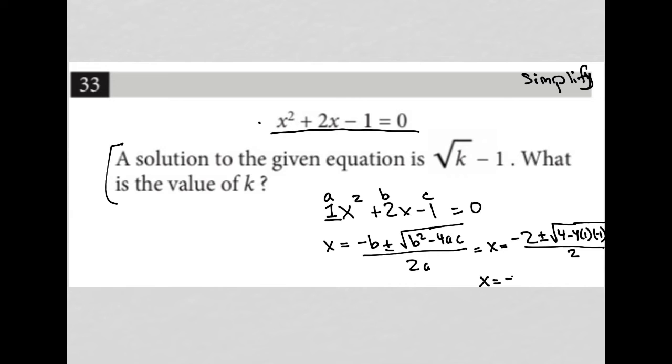I'd have x equals negative 2 plus or minus square root of 4. Then this becomes 4 plus 4, so square root of 8 over 2, and I can reduce all this. 2 goes into 2 once, 2 goes into negative 2 negative once.